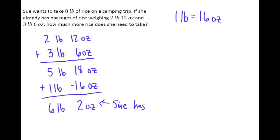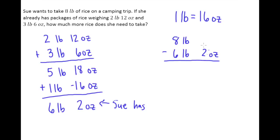The word 'difference' means subtraction, so we're going to take eight pounds and subtract six pounds two ounces. The amount of ounces on top is not enough to take away the amount of ounces on the bottom, so what we need to do is borrow.